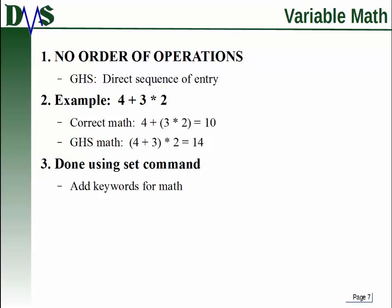So take for example, 4 plus 3 times 2. Correct math would respect order of operations, and it would know that you do multiplication before addition. So you do 2 times 3, that's 6, plus 4 equals 10.